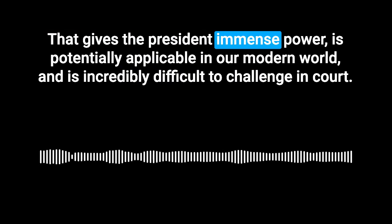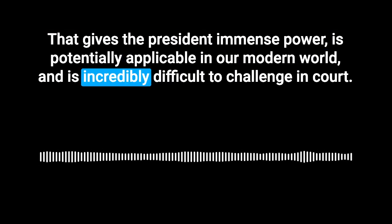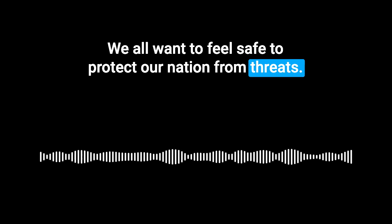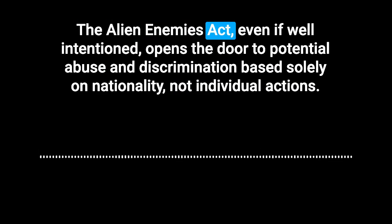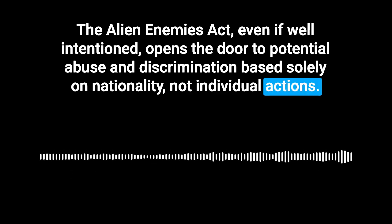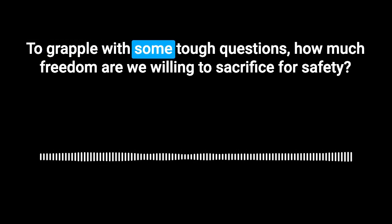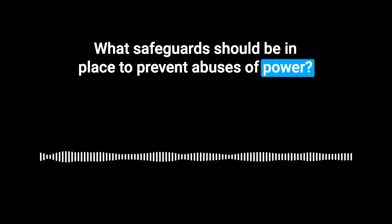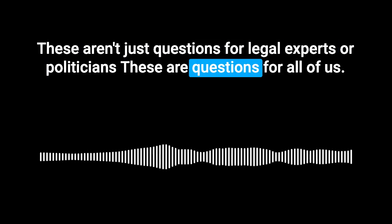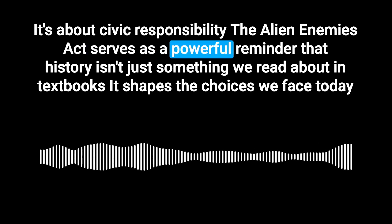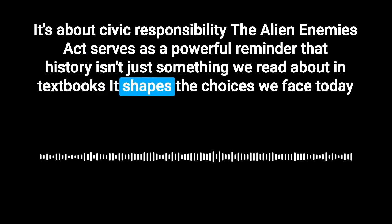We've got this law that gives the president immense power, is potentially applicable in our modern world, and is incredibly difficult to challenge in court. That all points to one central tension: the tension between security and freedom. We all want to feel safe and protect our nation from threats — but at what cost? Where do we draw the line? The Alien Enemies Act, even if well-intentioned, opens the door to potential abuse and discrimination based solely on nationality, not individual actions. How much freedom are we willing to sacrifice for safety? What safeguards should be in place to prevent abuses of power? These aren't just questions for legal experts or politicians — these are questions for all of us. The Alien Enemies Act serves as a powerful reminder that history isn't just something we read about in textbooks — it shapes the choices we face today.